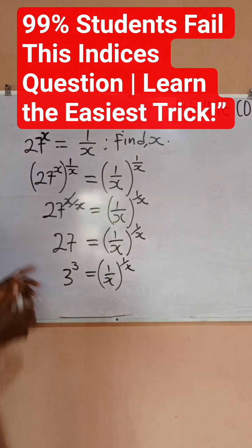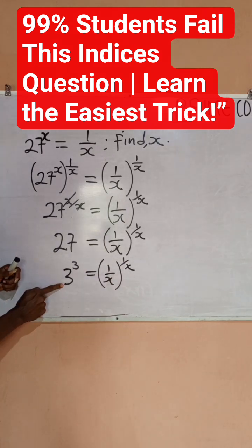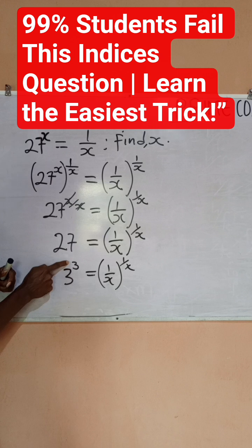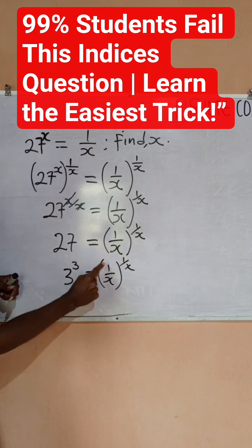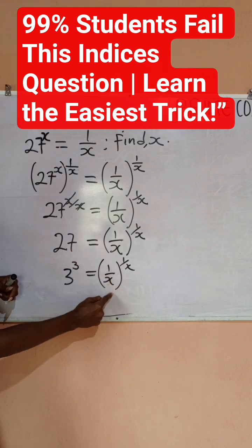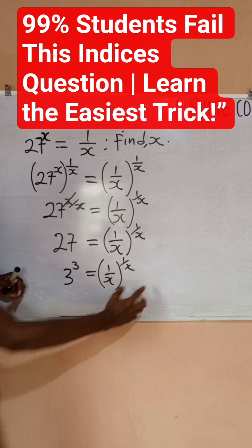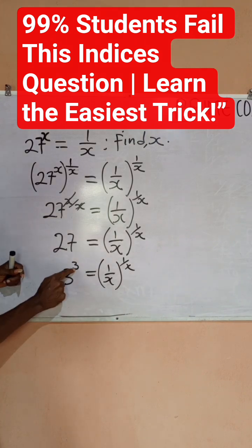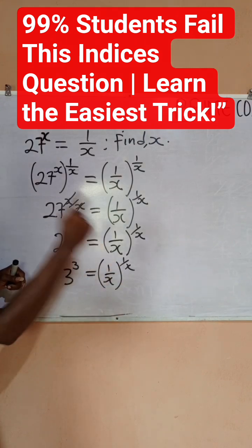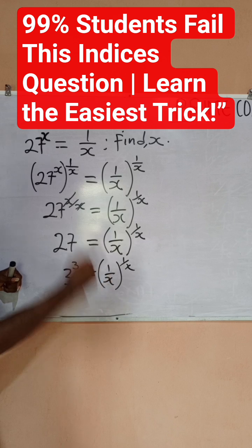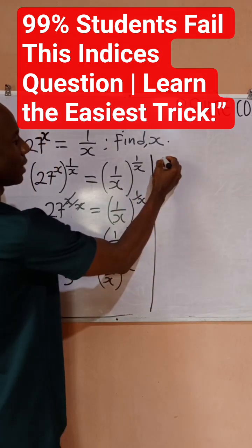By comparison, you would understand that since you have same number as the base here and same power, similarly you have same number as the base here which is 1 by x and same power, it simply means that 3 is same as 1 divided by x.